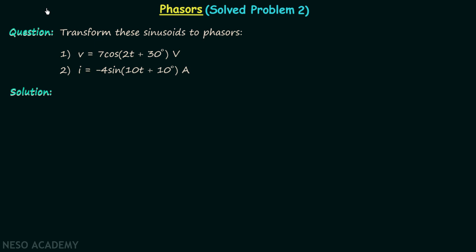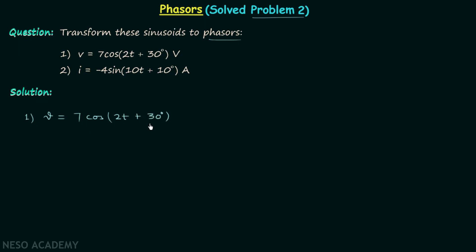In the last lecture we solved our first problem on phasors and now we are going to solve problem number two. In this problem we are required to transform these two sinusoids to phasors. It is very easy to have the phasor representation of the first sinusoid, which is v equal to 7cos(2t + 30°).